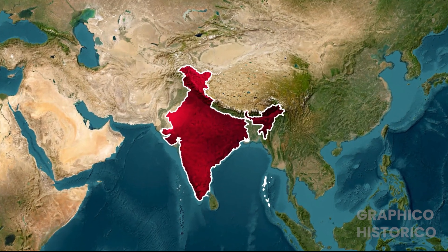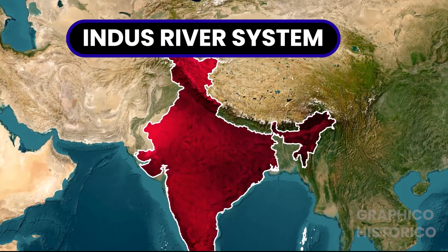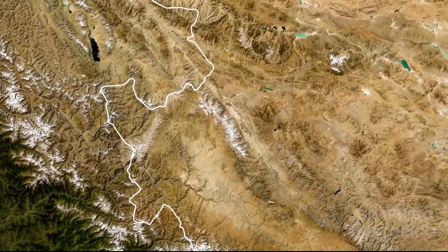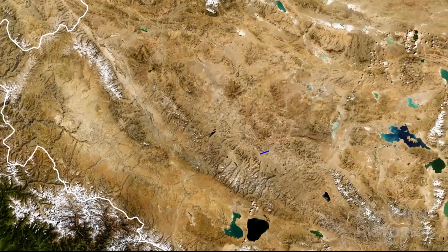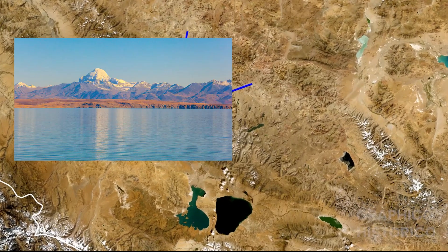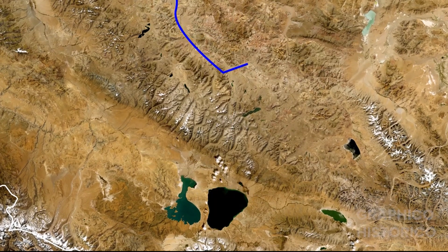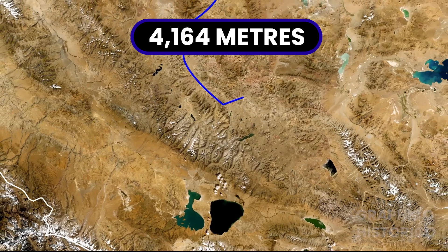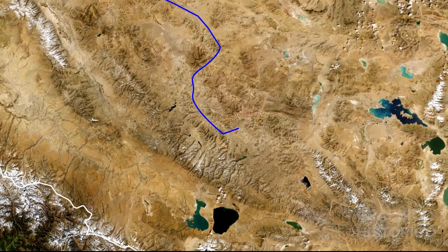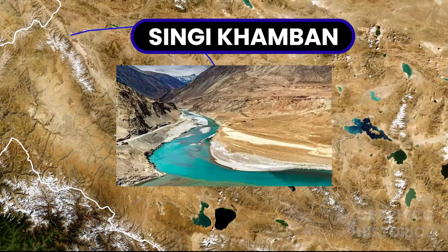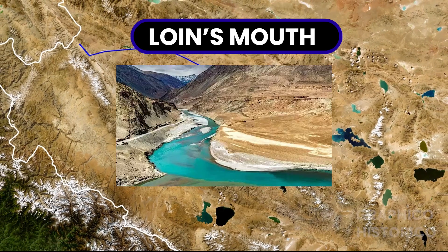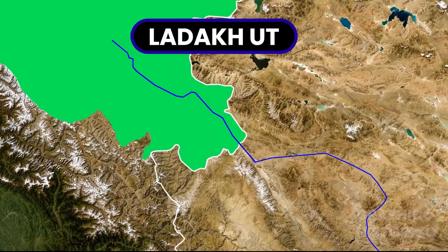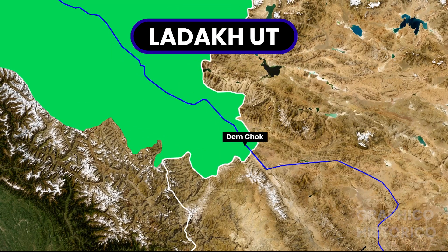Today we are about to learn the Indus river system. The Indus river originates from a glacier near Bokharchu, very close to Lake Manasarobar. It arises at a height of 4,164 meters. In Tibet, it is called Singi Khamban, or Lion's Mouth. From there, it enters into the Indian Union territory of Ladakh through the Demchok region.